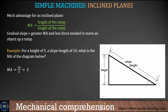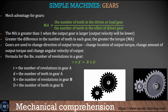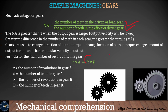The mechanical advantage of a gear is the number of teeth in the driven or load gear over the number of teeth in the driver gear. There is also a relationship between the number of teeth and the number of rotations: R1 × D1 = R2 × D2. You can use this equation to find the number of teeth and number of revolutions for a bigger or smaller gear system.